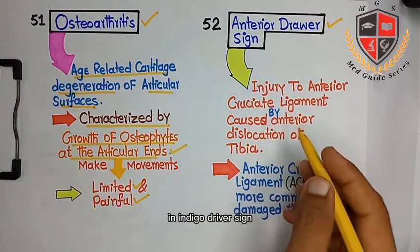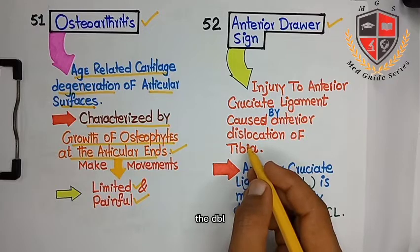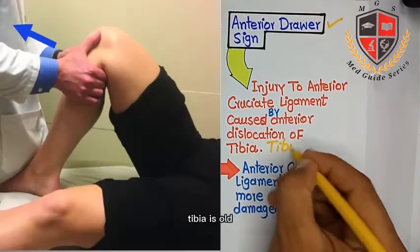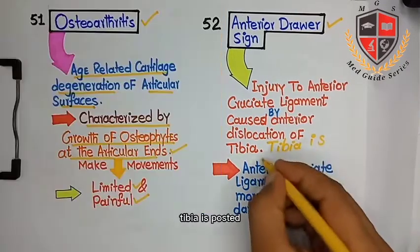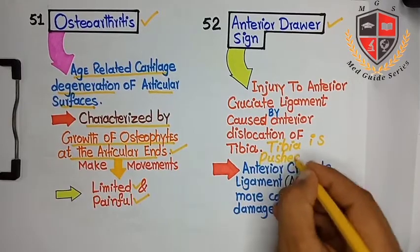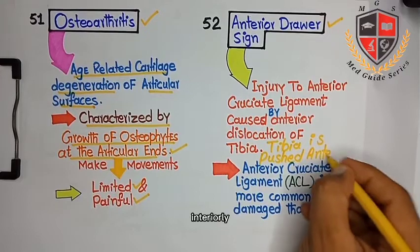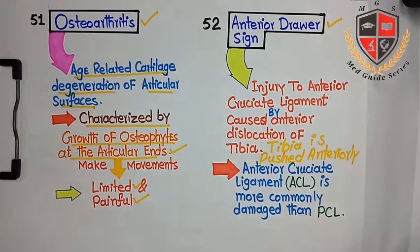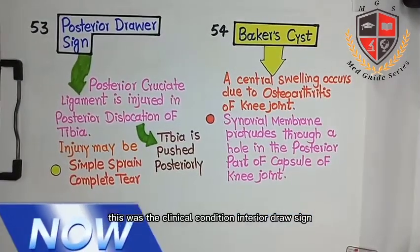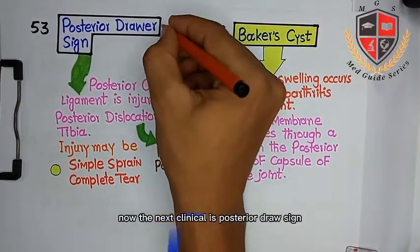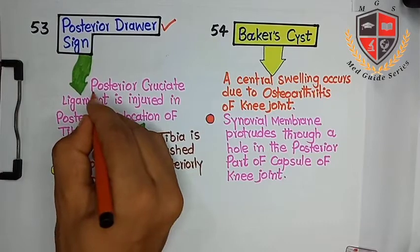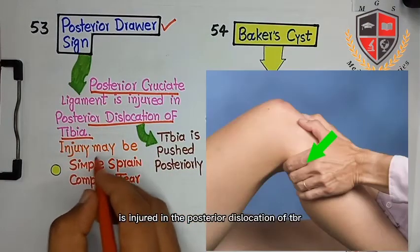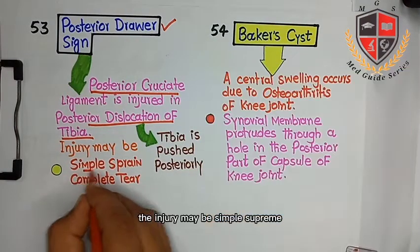In the anterior drawer sign, the tibia is pulled anteriorly. This was the clinical condition anterior drawer sign.